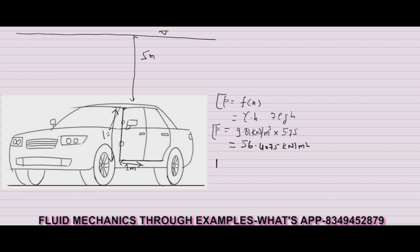Now if I have to calculate the force generated at the centroid point, this value will come as pressure into area: 56.4075 multiplied by the door area of 1.5 by 1 meter, and this value comes to be 84.61 kilonewton.